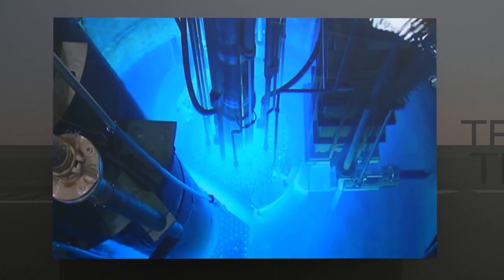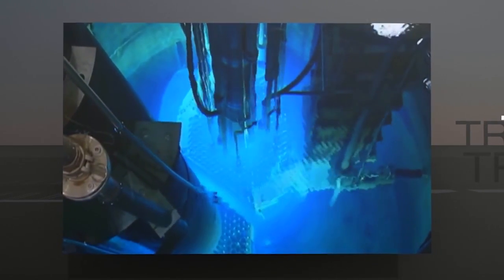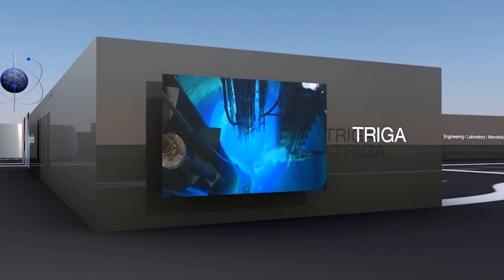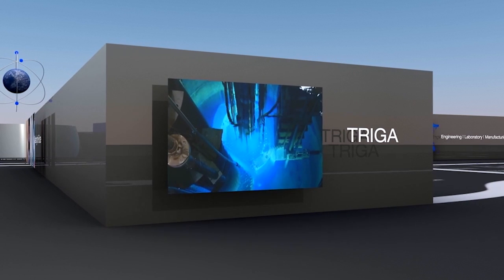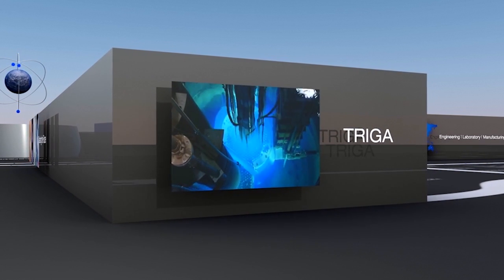Over the years, GA has also sold over 60 TRIGA nuclear research reactors for training, research, and isotope production. These are used at universities, medical facilities, and overseas nuclear research centers.